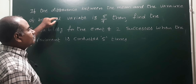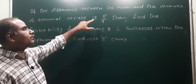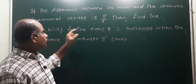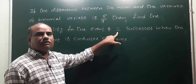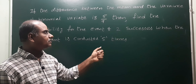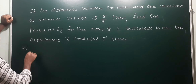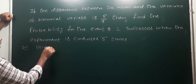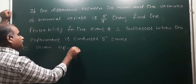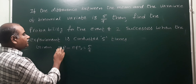Next problem: if the difference between the mean and variance of a binomial distribution is 5/9, find the probability for the event of two successes when the experiment is conducted five times. So the given values are: difference between mean and variance — that is np minus npq — equals 5/9, and n equals 5.